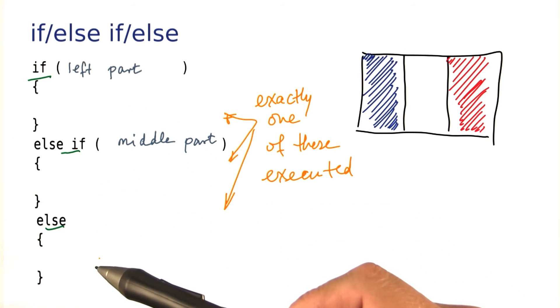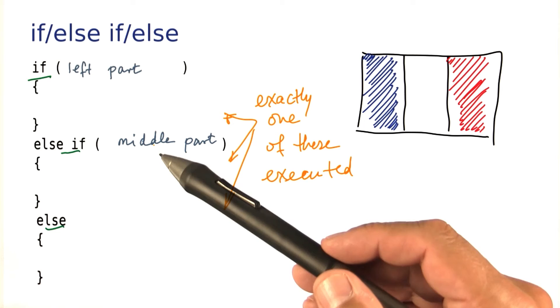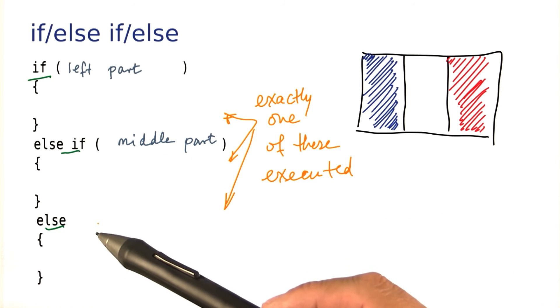In other words, exactly one of these three blocks is executed, depending on which condition is true, or whether none of them is true.